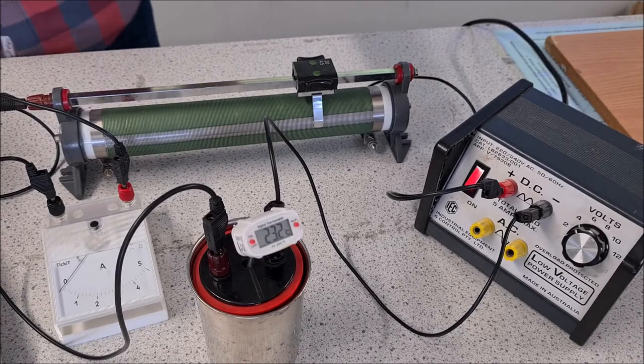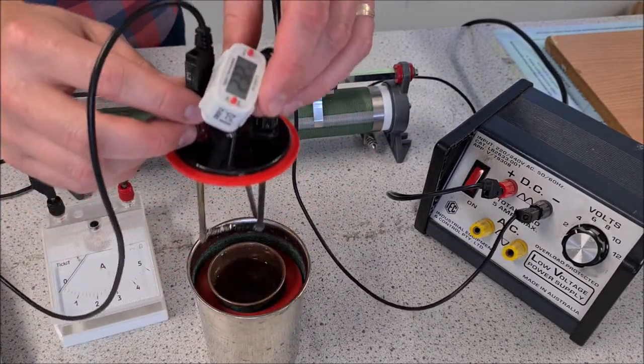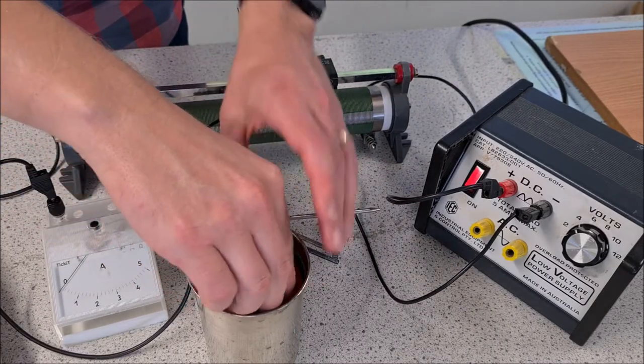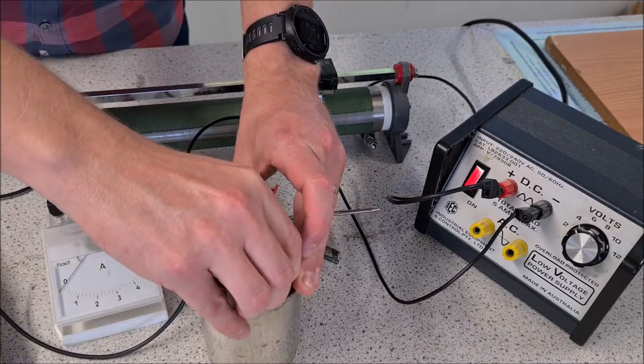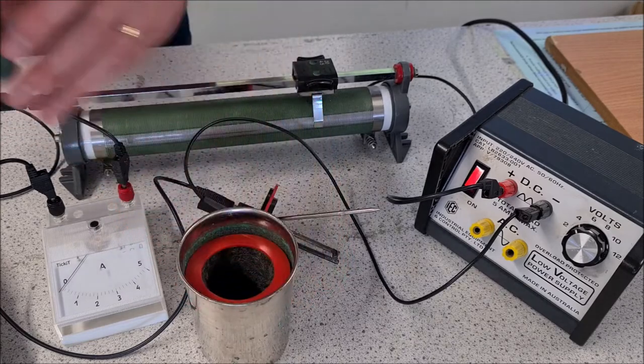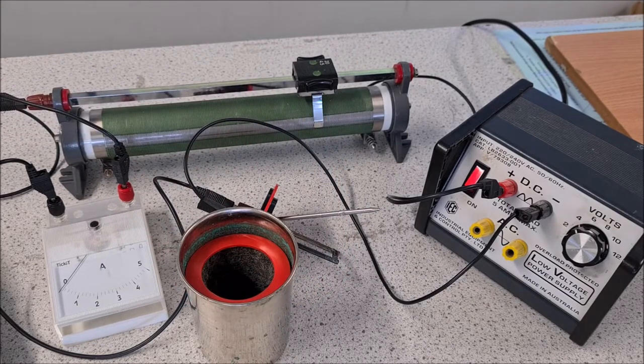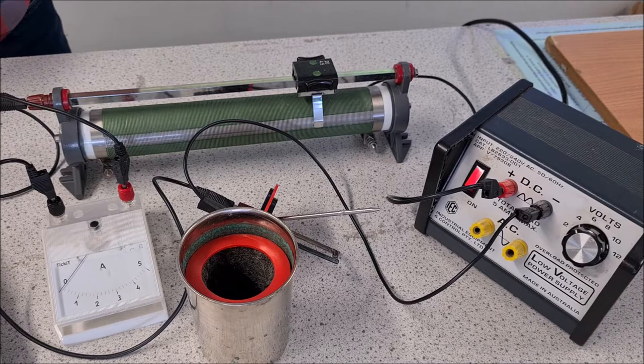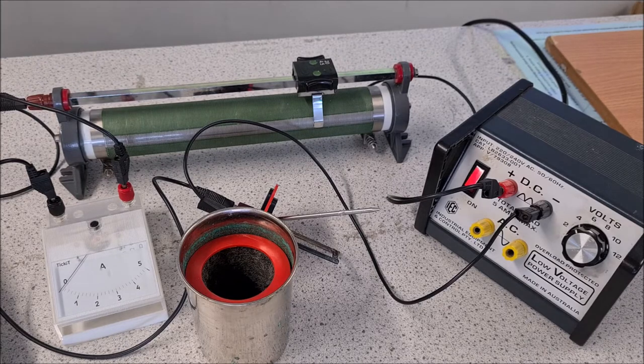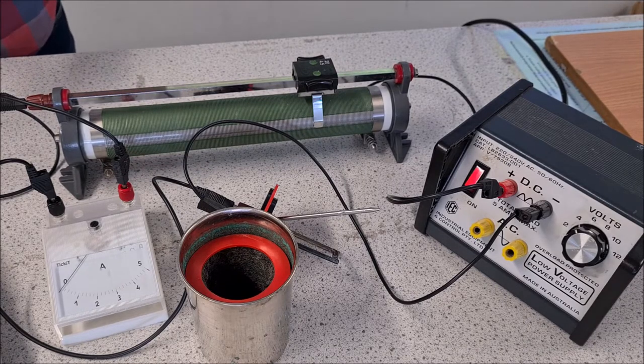Right, so what we do now is we're going to get rid of this water. We're going to change it out for fresh water back at close to our original temperature. Again, we're going to weigh the water to get as close to 92.1 grams as we can.